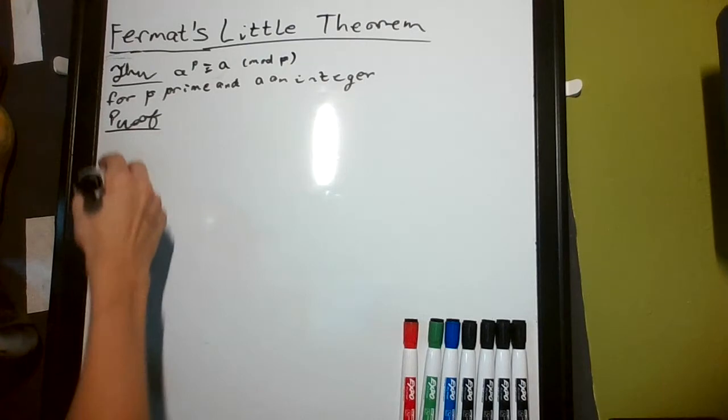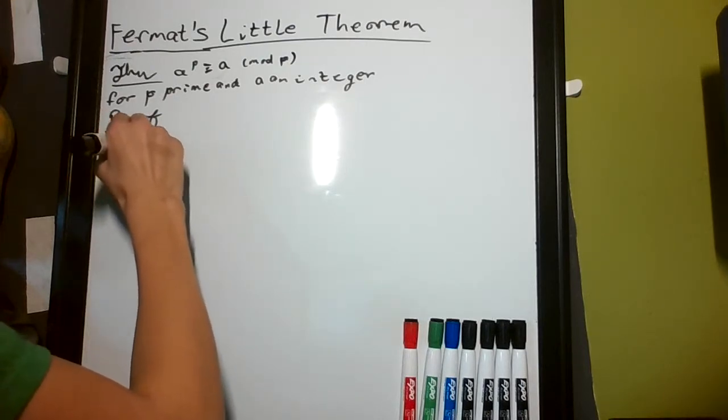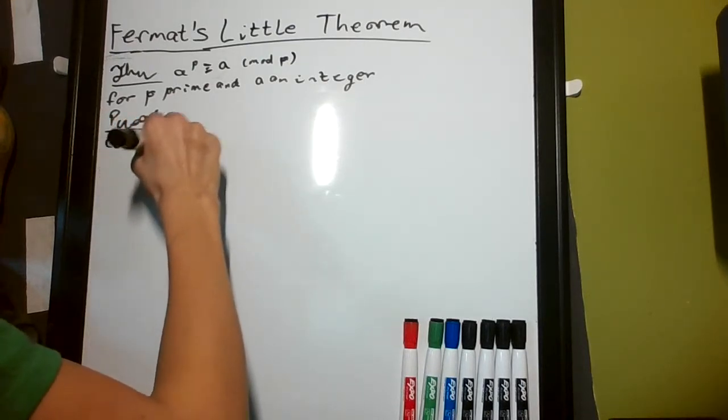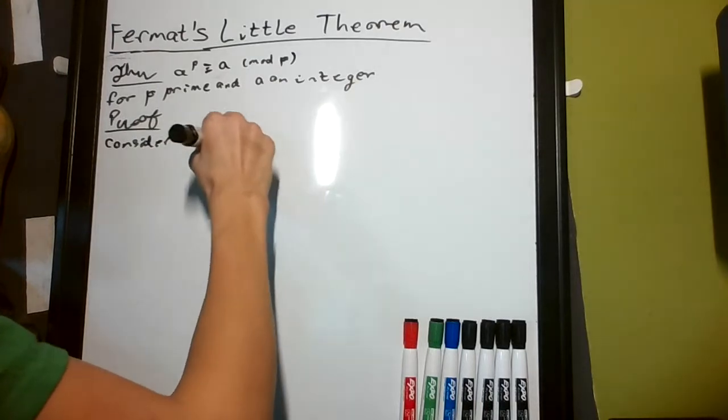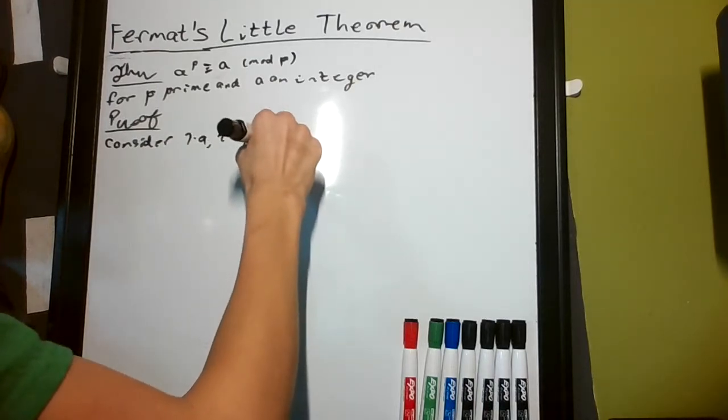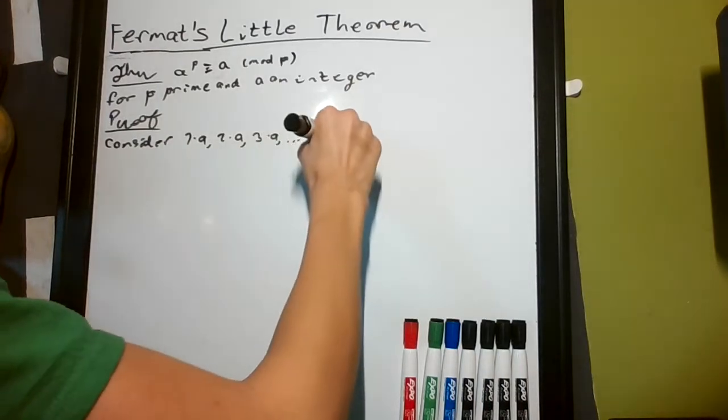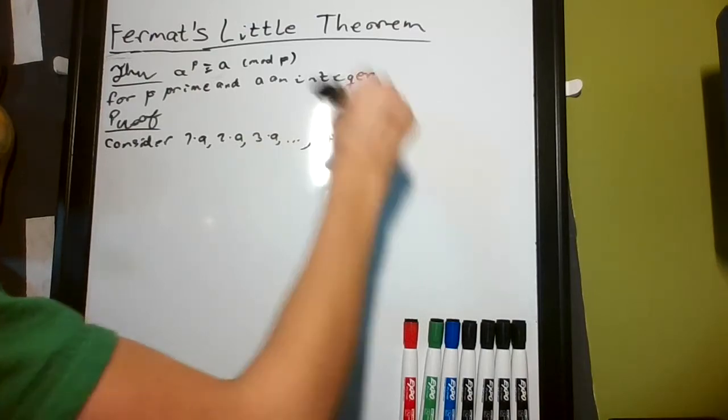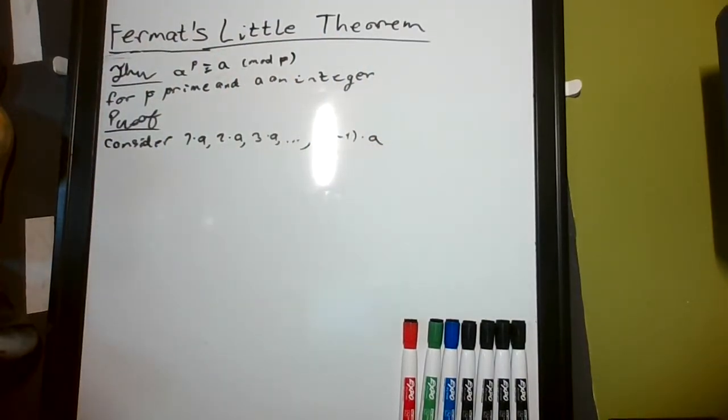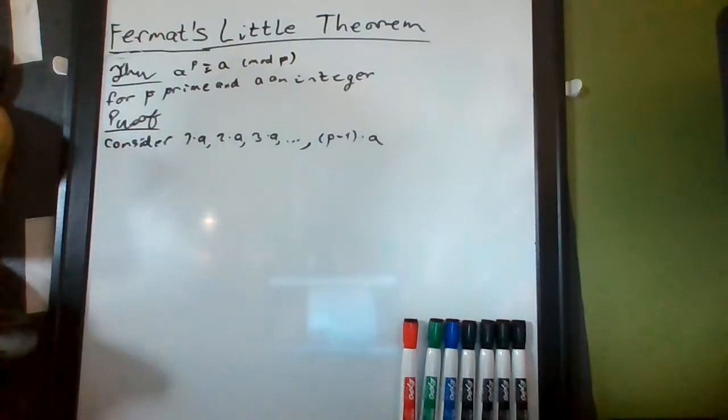The proof begins by considering 1 times a, 2 times a, 3 times a, and so on, all the way up to p minus 1 times a.